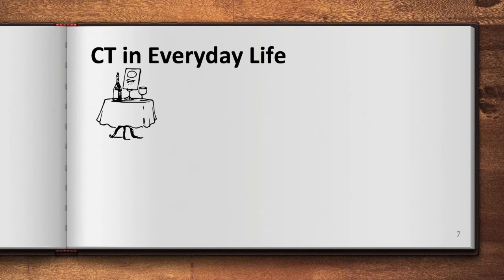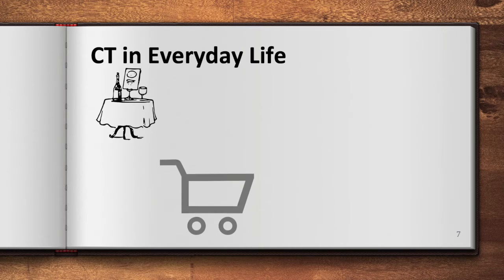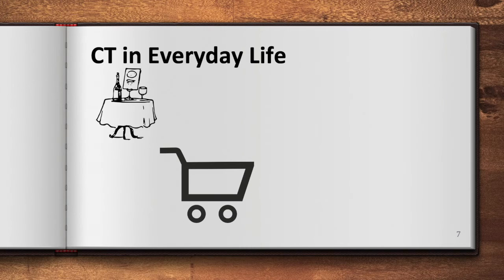Next up is pattern recognition: choosing which checkout line to get in when shopping. We may recognize from previous experiences that longer lines take longer, so we get into the shorter line, but we also take into consideration how many items each customer has. Imagine two checkout lines — one has two customers with shopping carts overflowing with items, and the other has ten customers each with one or two items. Which line would you get in?